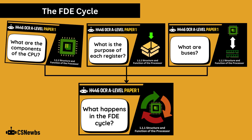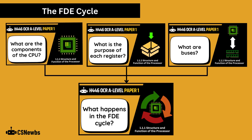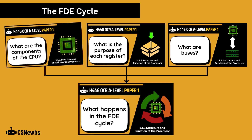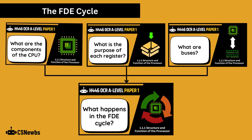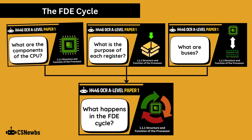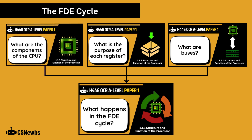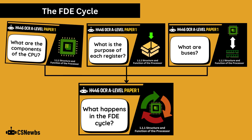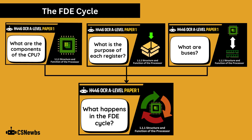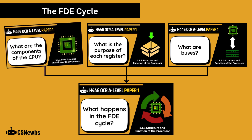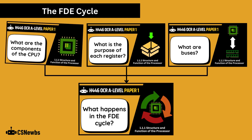Welcome to the first video in the OCR H446 Computer Science A Level Series for Paper 1. If you learned OCR GCSE Computer Science, the first few topics are quite similar, but you need to know the steps and processes of the fetch-decode-execute cycle in a lot more detail than at GCSE level. We will build up our knowledge in the first three videos and pull them together in the fourth, starting now with the components of the CPU.